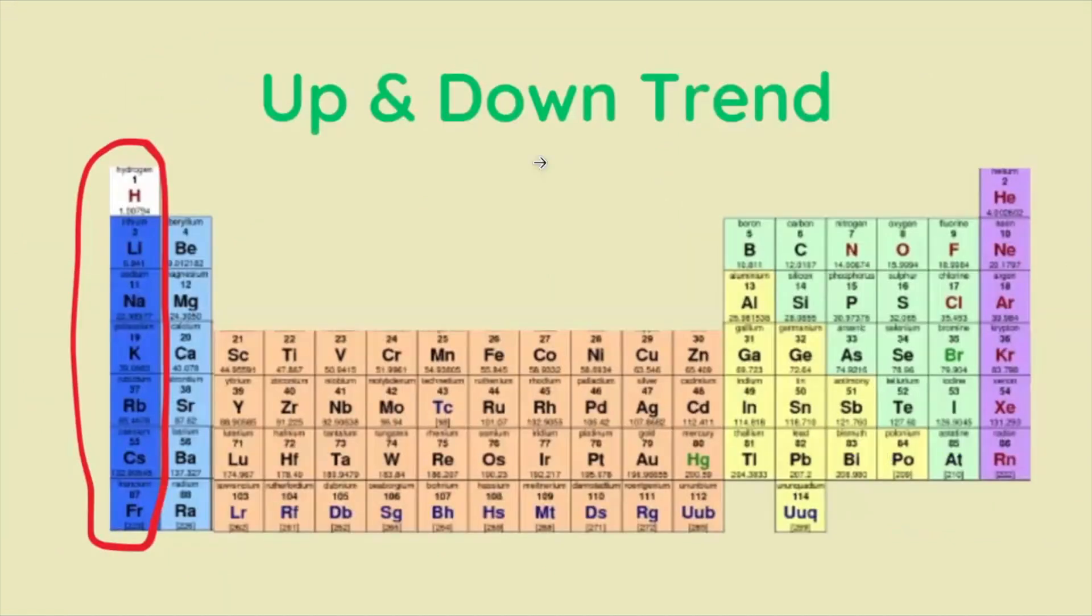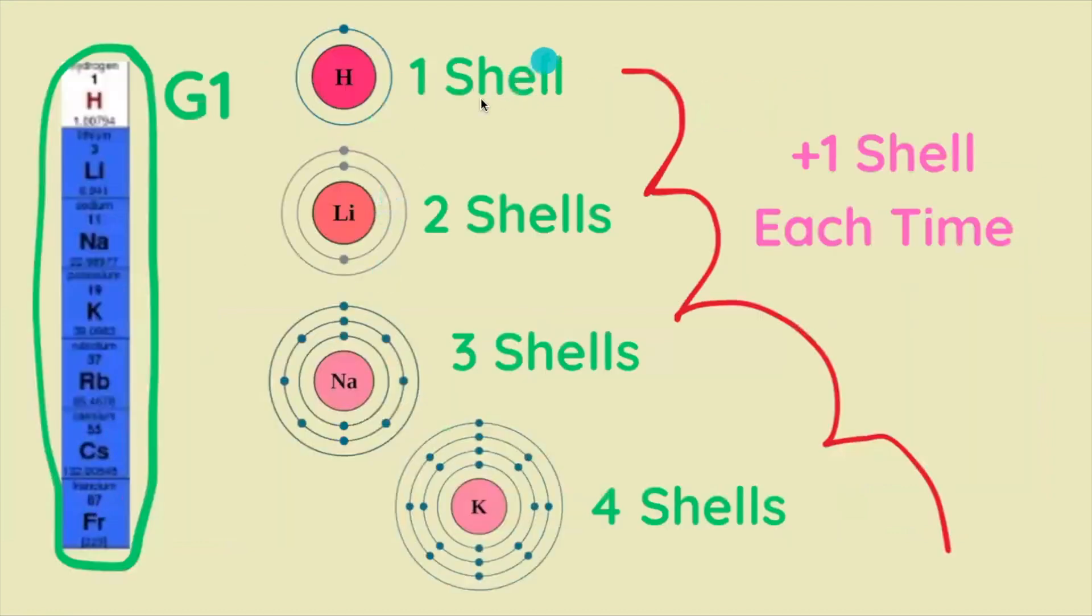Let's take it one direction at a time. What is the trend of atomic radius size up and down? We'll examine group 1 elements. Hydrogen has one shell,